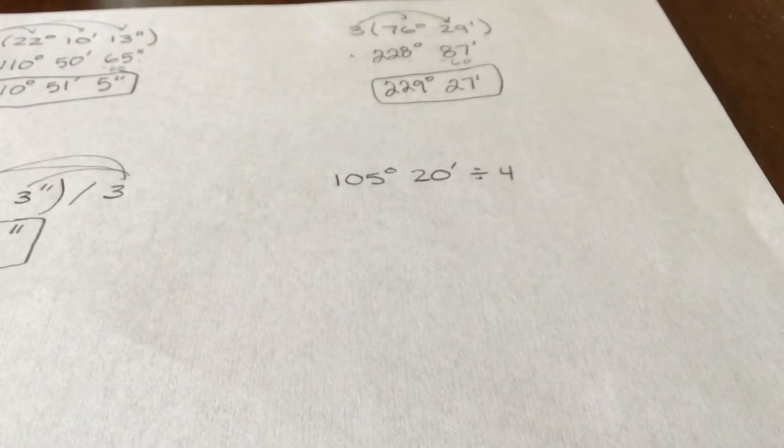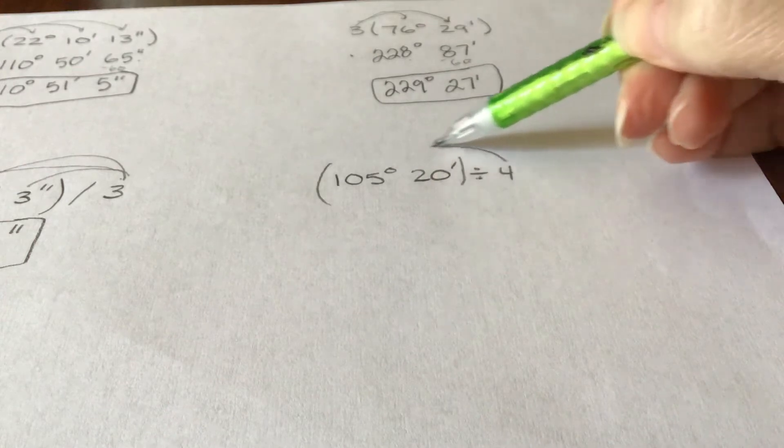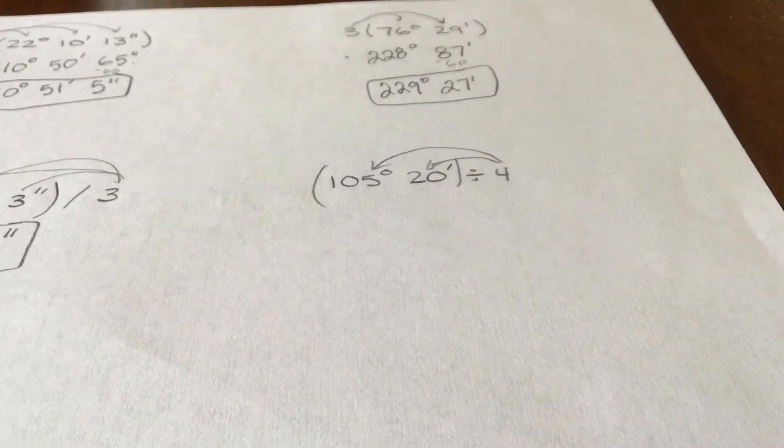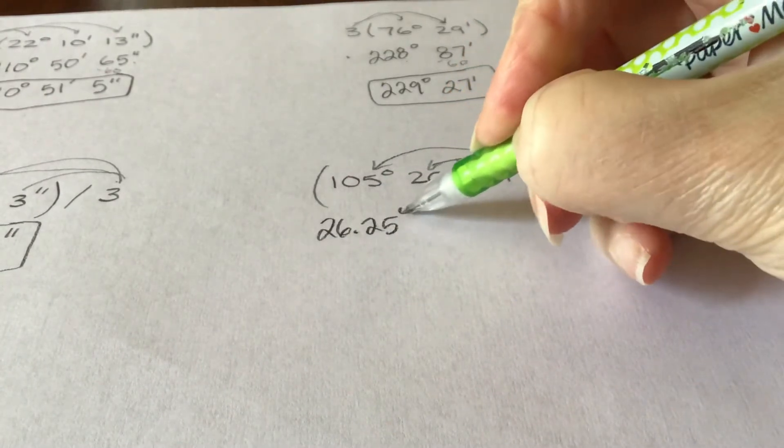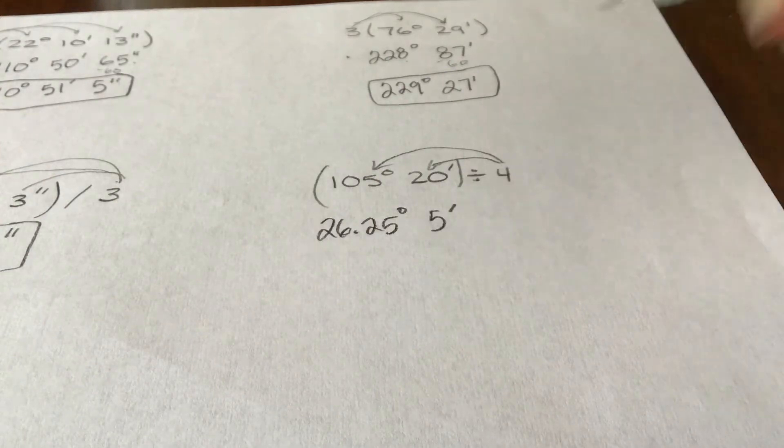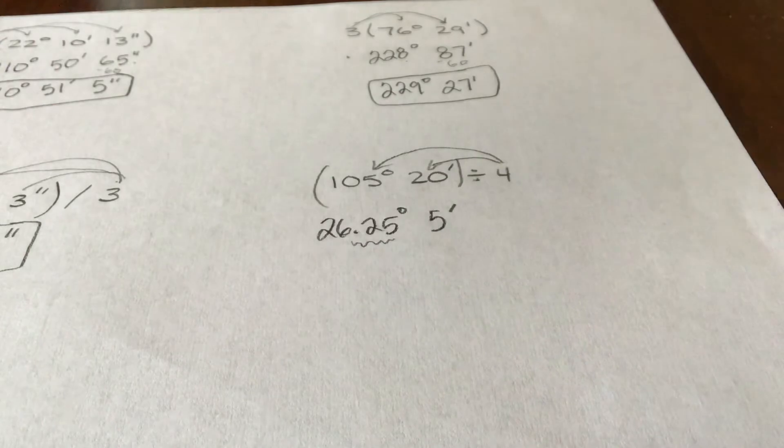All right, let's try this last division one. We've got to divide these sections by 4. So we go 105 divided by 4 is 26.25 degrees. And 20 divided by 4 is 5. Now, we need to think a little bit about how to regroup this because we can't have this decimal that's here.